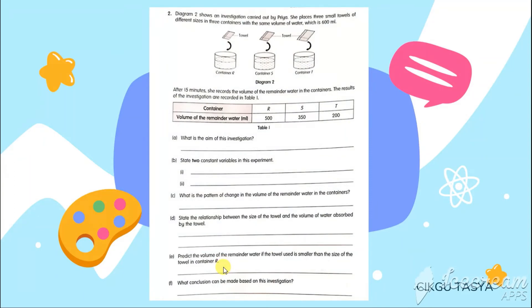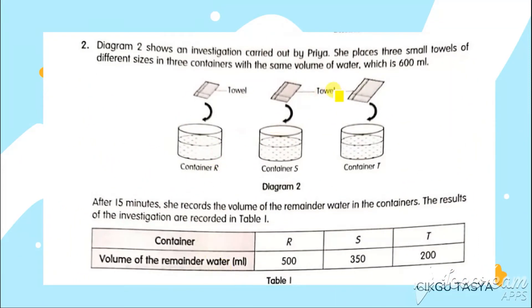These are the type of normal questions you get in paper 2. Just, I teach you, just choose a simple one, just to discuss the answer with you all. You can see here, I have three small, you always have to read the instruction. Diagram 2 shows an investigation carried by Priya. She places three towels of different sizes in three containers with the same volume of water, which is 600 ml. This is the containers and you can see, after 15 minutes, she have recorded the data. Recorded the volume of remainder water in the containers.